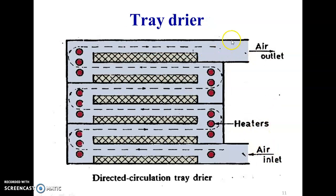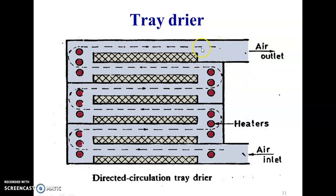The next one is the tray dryer. The tray dryer consists of an insulated cabinet having metal trays. These are the trays on which the wet material is fed. The air is taken in from here, and heaters are provided. By means of heaters, this air gets heated and flows over these wet solids. The moisture is added from the wet solid into this hot air, and this air is moving in this direction and is taken out from the air outlet. Tray dryer is generally used for small capacity or for small batches.